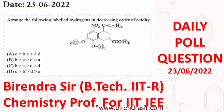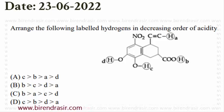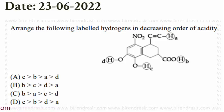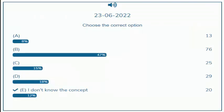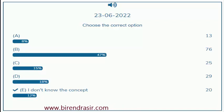Hello everyone. Now I am going to discuss the question of the poll which I posted on 23rd June 2022. The question says: arrange the following labeled hydrogens in decreasing order of acidity. Acidity here means acidic strength. Different options are given. Those who participated — 8% have said A, 47% have said B, 15% have said C, 18% have said D, and 12% have said they don't know the concept.